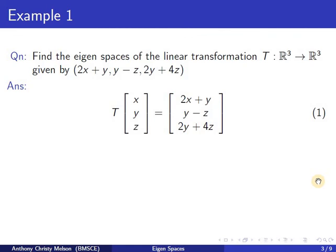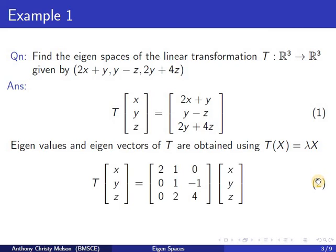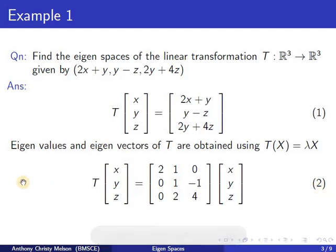When we say Eigen values of a linear transformation, we are talking about the non-zero vector x which satisfies t(x) equal to lambda x. We can write equation 1 in the form of a matrix multiplication, given by equation 2. Now we have t(x) equal to Ax, and for Eigen values and Eigen vectors of t, we have t(x) equal to lambda x, therefore Ax equal to lambda x.